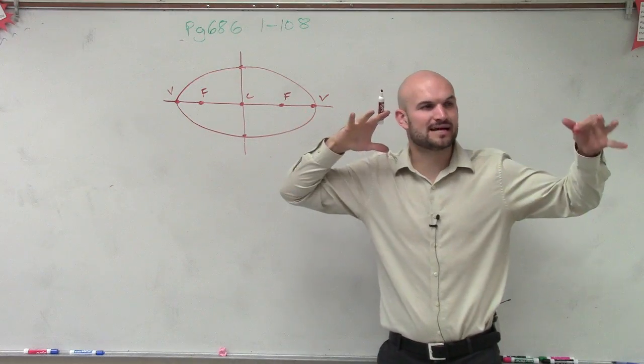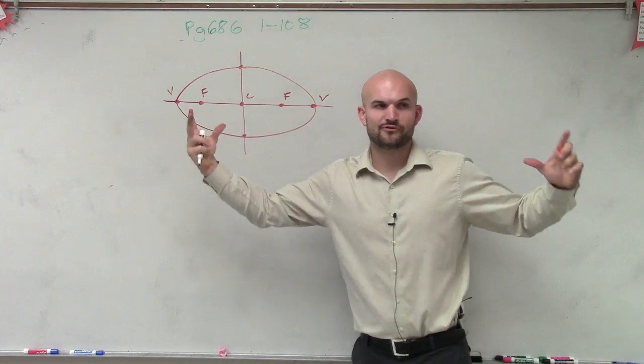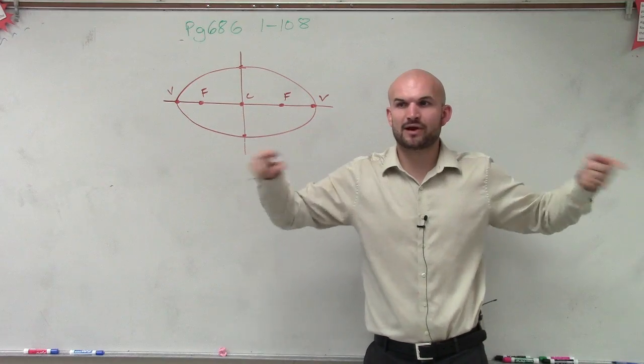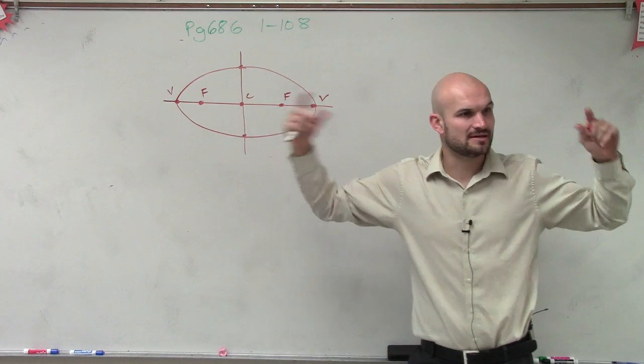And one way we sometimes thought about an ellipse was pretty much like two parabolas facing towards each other. Because when you had that parabola, that's how you kind of got the foci. The foci kind of helps you do that.